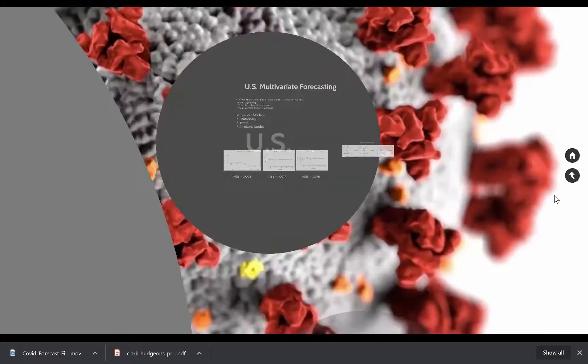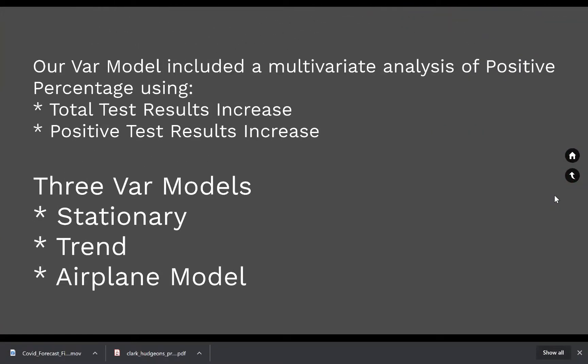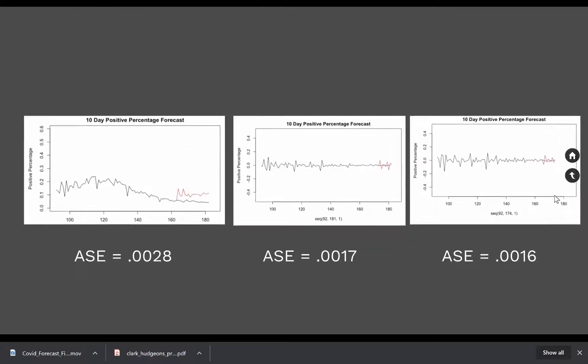Looking at the US multivariate analysis we did a VAR model, actually did three. Doing analysis of positive percentage using total test results increase and positive test results increase. Did the stationary, the trend, and then the airline model as well.